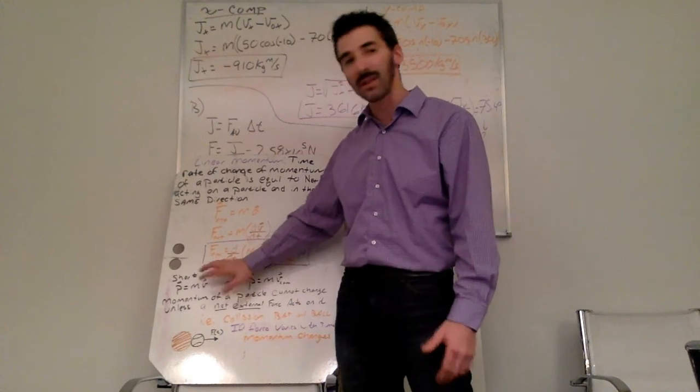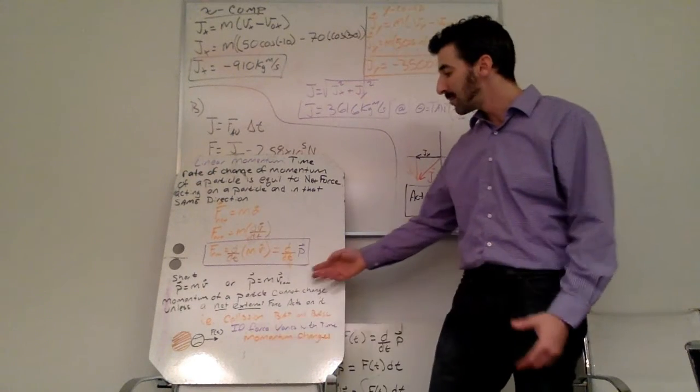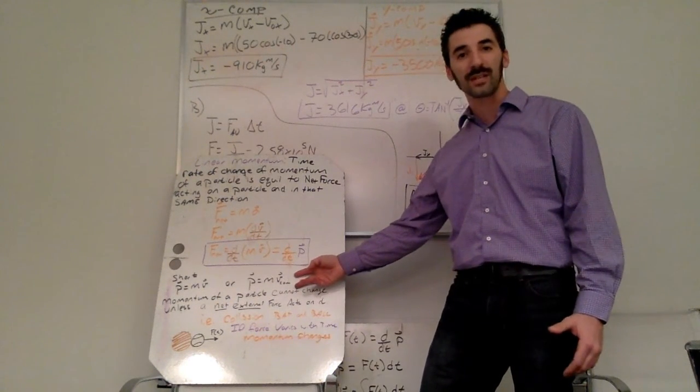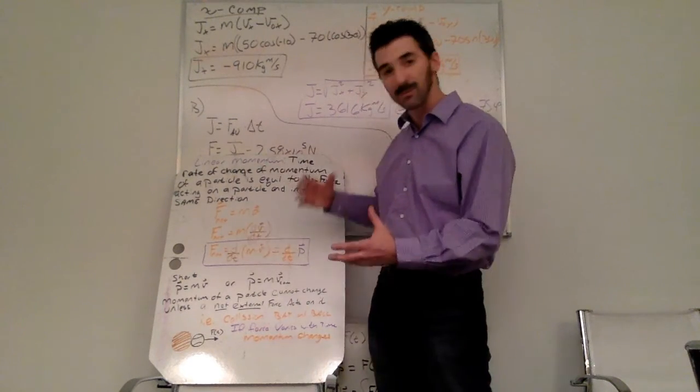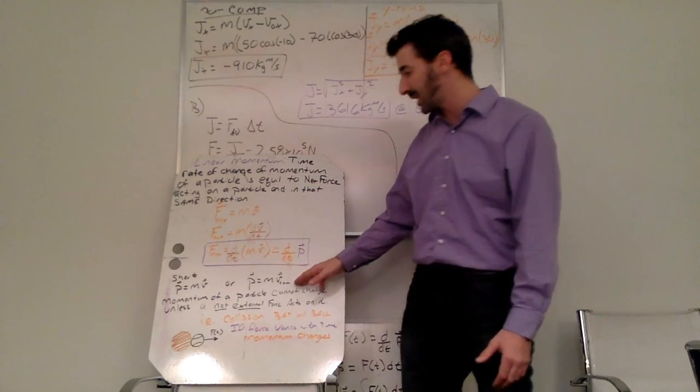We know momentum is mass times velocity and as we've already talked about, we can find the momentum of a system of particles by using that center of mass.